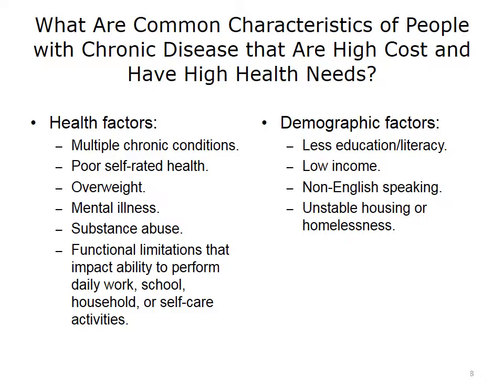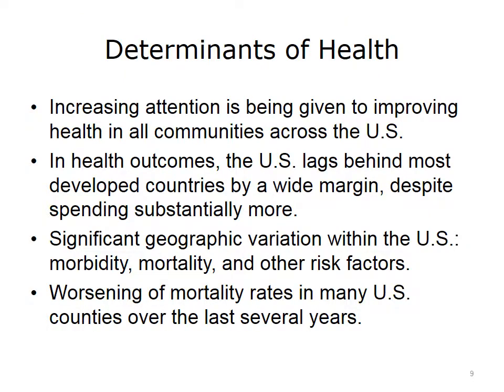In terms of demographic factors, those with high cost and high needs are often less educated, have health literacy and general literacy issues, are low income, are non-English speaking, or have unstable housing or are homeless. Increasing attention is being paid to improving health in all communities across the U.S., particularly for those with high costs and high needs. The U.S. lags behind most developed countries by a wide margin in health outcomes, despite spending substantially more. Within the U.S., there is significant geographic variation in morbidity, mortality, and risk factors, with worsening mortality rates in many counties.